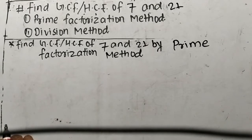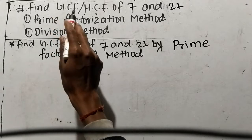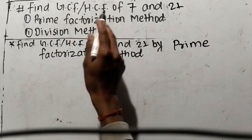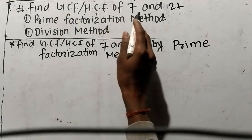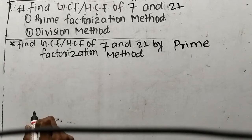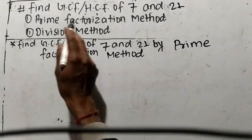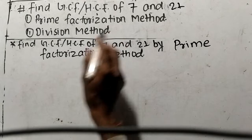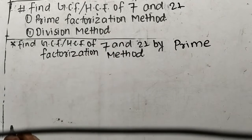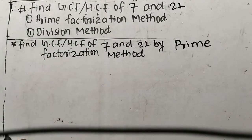Today in this video we shall learn to find GCF or HCF of 7 and 21. Here you shall find out GCF or HCF by two methods: first by prime factorization method and second by division method.